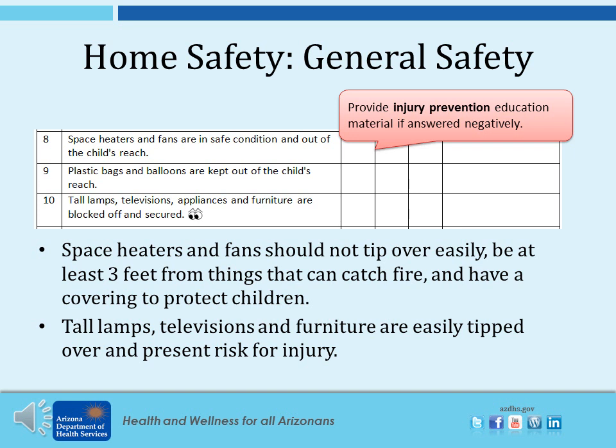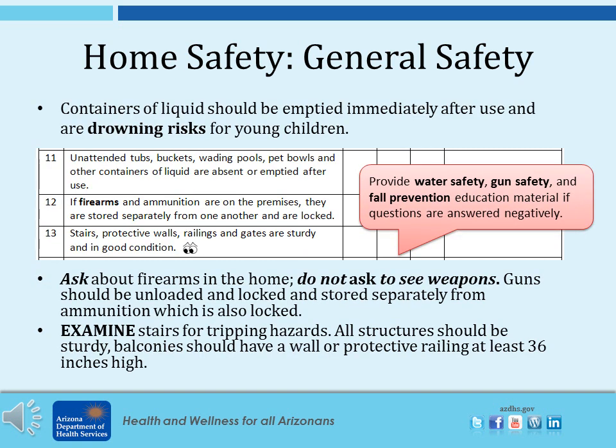The next questions are about space heaters and fans, plastic bags and balloons, and tall lamps, TVs, and furniture. Space heaters and fans should not tip over easily, should be at least 3 feet from things that can catch fire, and should have a covering to protect children. Tall lamps, TVs, and furniture are easily tipped over and present a risk for injury. The next questions are about unattended containers of liquid, firearms, and stairs. Containers of liquid should be emptied immediately after use as they are a drowning risk for young children. Ask about firearms in the home but do not ask to see weapons — guns should be unloaded, locked, and stored separately from ammunition, which is also locked. Examine stairs for tripping hazards; all structures should be sturdy, and balconies should have a wall or protective railing at least 36 inches high.